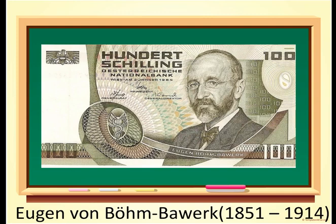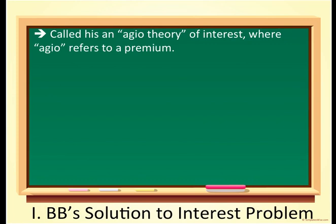Böhm-Bawerk's solution to the interest problem — he called his theory an agio theory, where that term agio refers to a premium. So what he's trying to explain is why is it that there's apparent undervaluation of capital goods? Why is it that when you buy capital goods in the present, you have to pay less for them than what you expect their services will yield for you down the road? And so it seems like there's this premium that you end up earning.